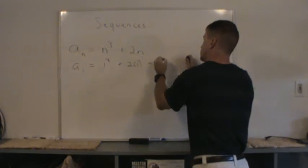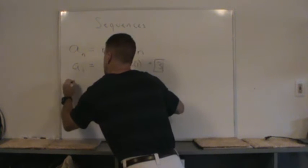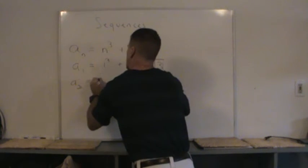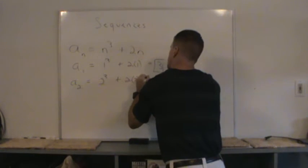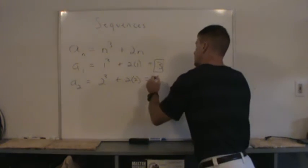We can find the second term. a_2 would be 2 cubed plus 2 times 2, which is 8 plus 4 equal to 12.